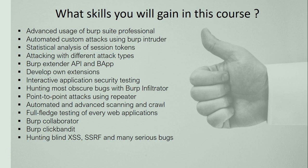Coming to the course modules and the skills you will gain after completing this course. The first topic is about Burp Suite Professional, which will be used heavily throughout this course from start to end. We will use automated custom attacks using Burp Suite Intruder, Repeater, and the most advanced attacks on session tokens in order to attack authentication and authorization. We will also use Burp Suite Intruder to hunt for vulnerabilities like insecure direct object reference, cross-site request forgery, blind cross-site scripting, server-side request forgery, and many serious bugs that are difficult to find without using Burp Suite Professional. These are the interactive application security testing skills you will gain after completing this course.